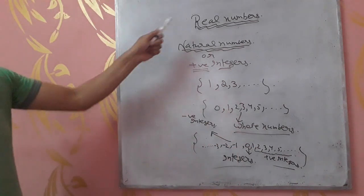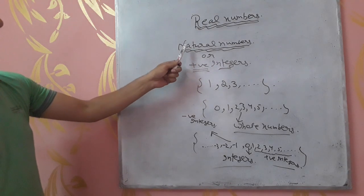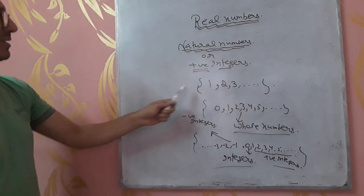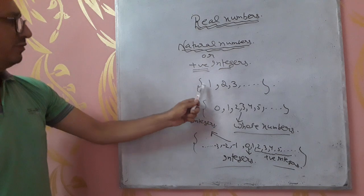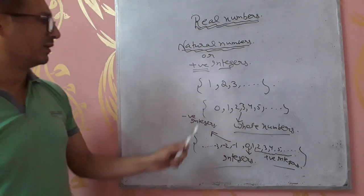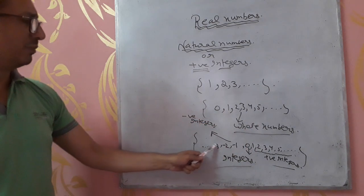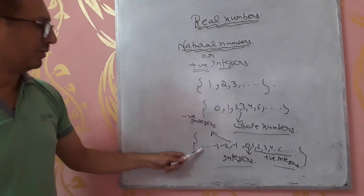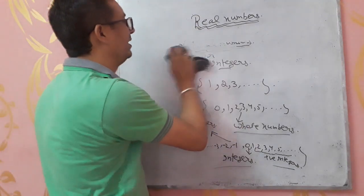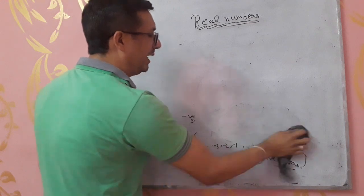So kids, we are recalling these numbers. Today we have recalled natural numbers — another name is positive integers. When natural numbers are taken along with 0, these are called whole numbers. Then when we take whole numbers and include all natural numbers with a negative sign, those become integers. In integers, there are 3 categories: positive integers, negative integers, and simply 0.